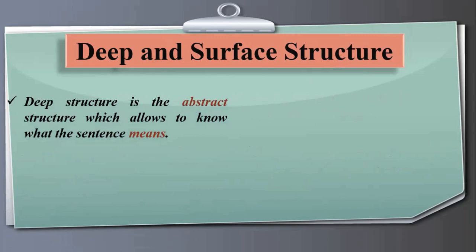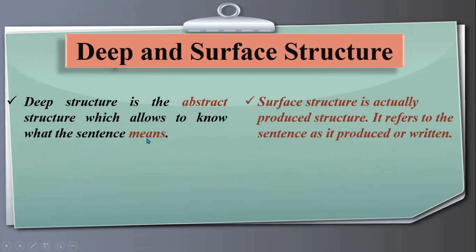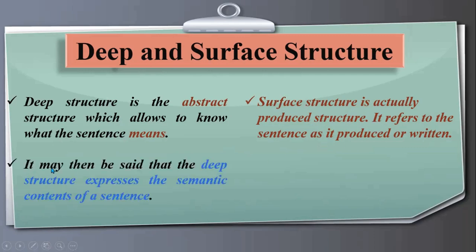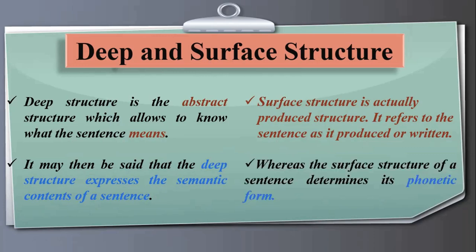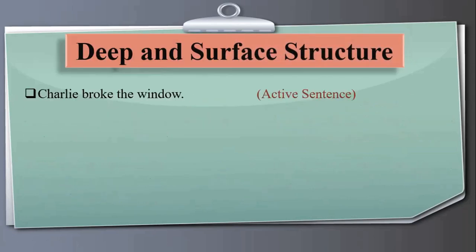Deep structure is the abstract structure which allows us to know what a sentence means — it is concerned with meaning. Surface structure is the produced structure; it refers to the sentence as it is actually produced or written — the concrete form of language. The deep structure expresses the semantic contents of a sentence, while the surface structure determines its phonetic form.